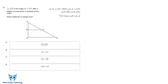Question 31 says: triangle ADE is the image of triangle ABC after a dilation of scale factor k centered at the origin. Which statement is always true? There was another question about similar triangles — question 22 — so I'll put the link up there. You should probably check out that video first if you haven't already.